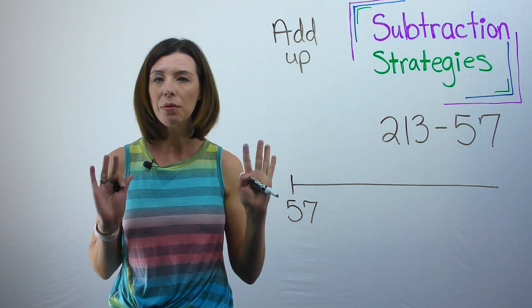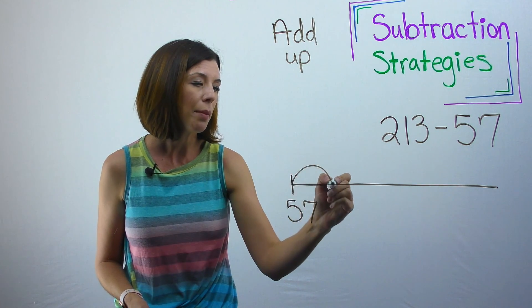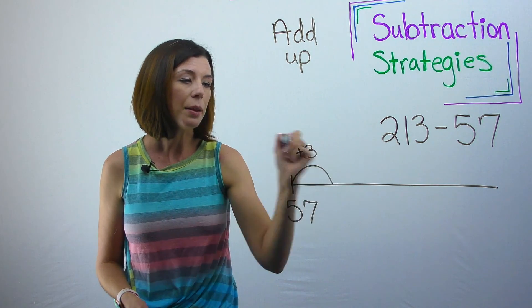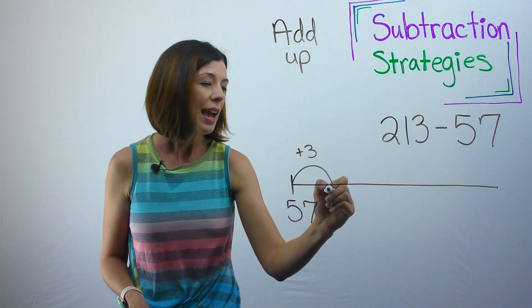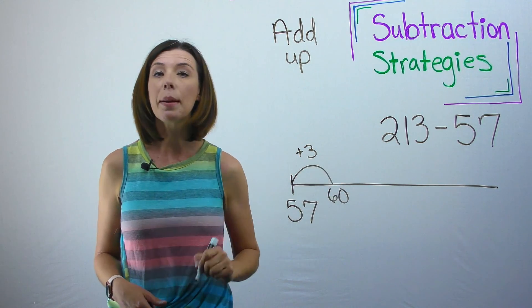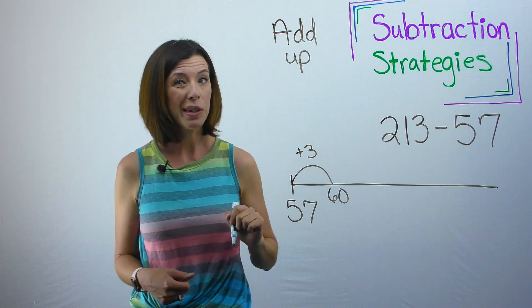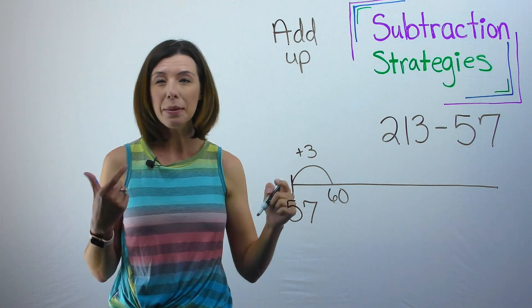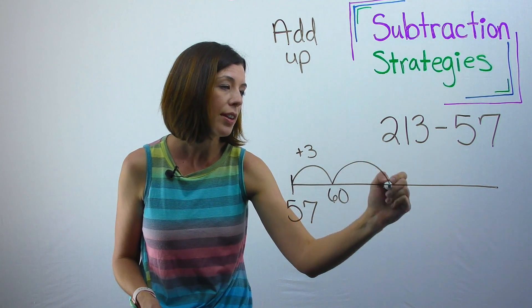So I see that this is at 57 and right away I want to get to a friendly number which is 60. So I'm going to hop 3. Notice that I am going to put this plus 3 on there, and now I know that I am at the number 60. I know I need to get all the way to 213, so I got a ways to go. I know that because of my combinations to 10, 60 plus 40 would get me to 100. So I'm going to go ahead and do that next.